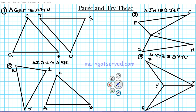Welcome back — hopefully you had a chance to try the problems. For number one: angle G is congruent to angle S, angle E is congruent to angle T, and angle F is congruent to angle U with three arcs each. For the sides: GE is congruent to ST with one tick mark; EF is congruent to TU with two tick marks; and GF is congruent to SU with three tick marks.